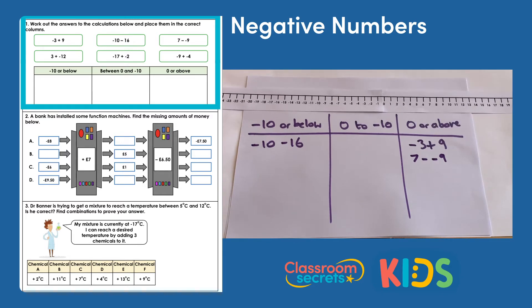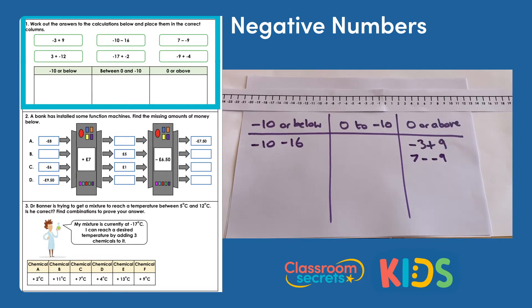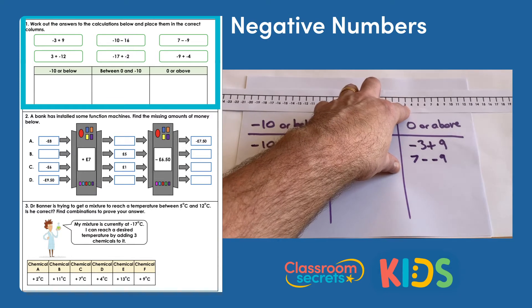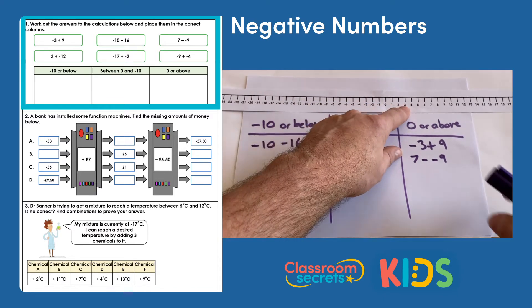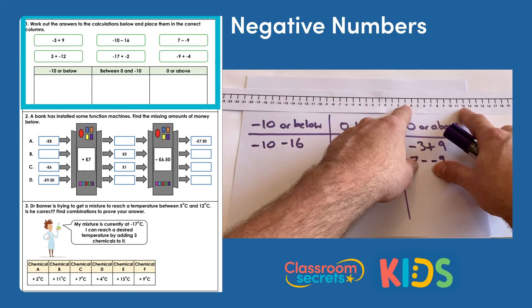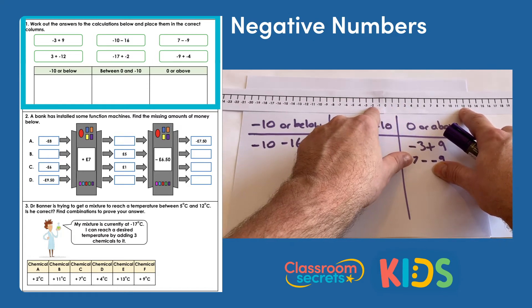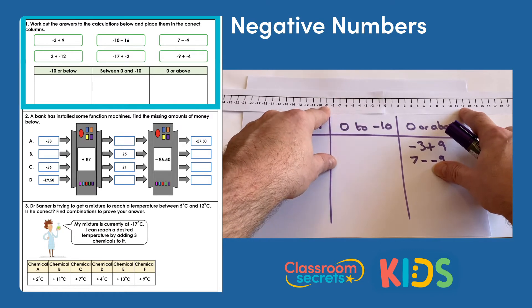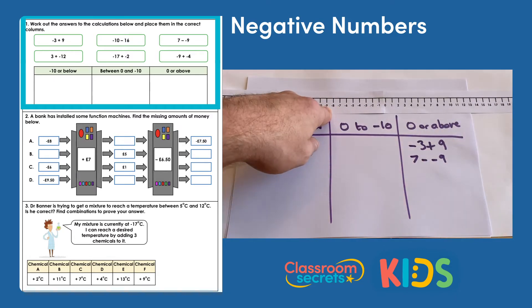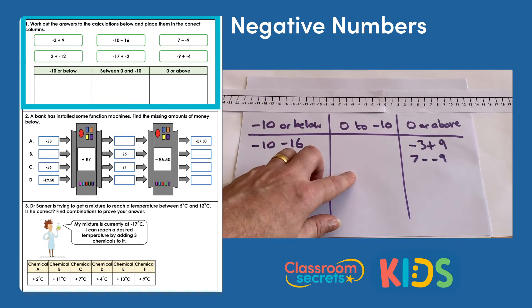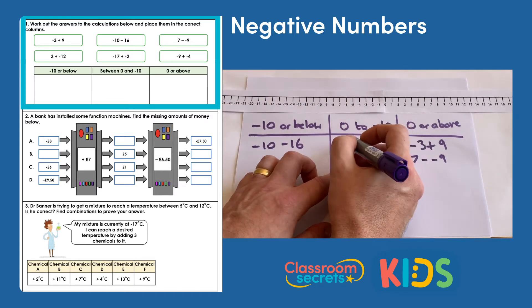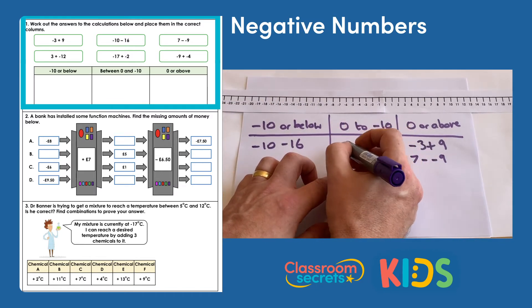The fourth question is 3 add negative 12. Starting at 3, we are adding a negative value which means we're actually doing a takeaway. So 3 take away 12 gives us negative 9, which means 3 add negative 12 goes in the zero to negative 10 column.